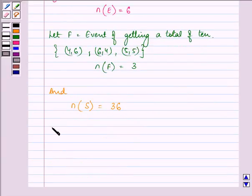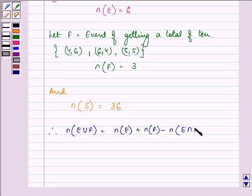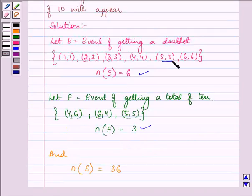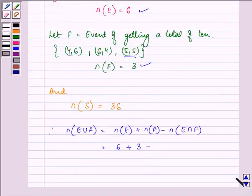We need to find the number of elements in E union F first. That will be n(E) plus n(F) minus n(E intersection F). n(E) is 6, n(F) is 3, and there is only one element which is repeating, so it will be minus 1. That equals 8.